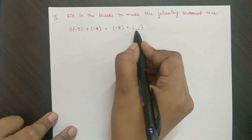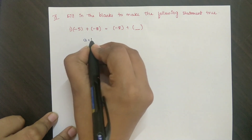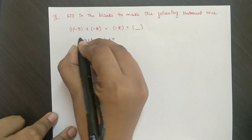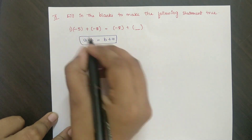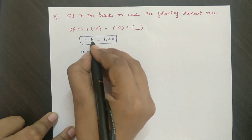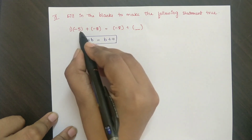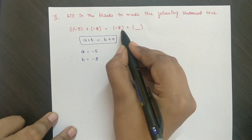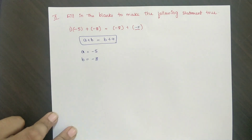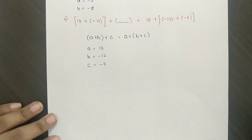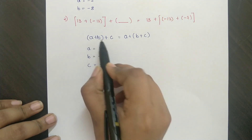Fill in the blanks. The expression is in the form of a plus b equals b plus a, which is the commutative property, where a equals minus 5 and b equals minus 8.